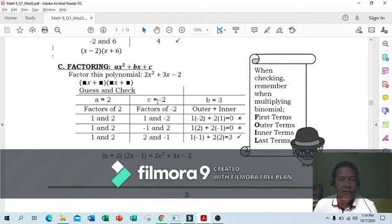c is negative 2. Find factors of negative 2. For b, look at outer and inner. Find factors for outer and inner that equal 3. Using outer: 1 and negative 2—1 times negative 2 is negative 2, 2 times 1 is 2, negative 2 plus 2 is 0. Next try: 1 and 2, negative 2 and 2—same result, 0. Try 1 times negative 1 and 2 times 2: negative 1 plus 4 equals 3. That's it.